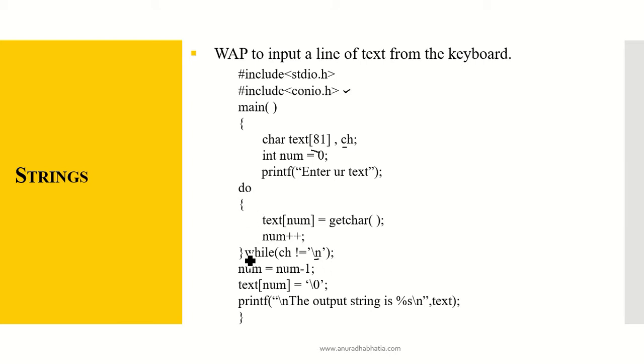As I go into the while loop, as I don't enter the enter key, it will continuously take my get character and my num will be incremented. So that will count also how many characters I have inputted. And then one extra. So num equals num minus 1. Text[num] equals slash zero. So last character will be slash zero and print it. The output string is %s and text.